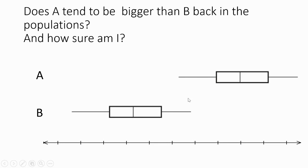Because there is quite a big separation here, and if you've got this jitter going on for both boxes, the chances are the boxes won't overlap. So there's a reasonable amount of separation between the samples, and we are fairly confident that if we have that separation, A would tend to be bigger than B back in the populations based on the evidence from the sample.